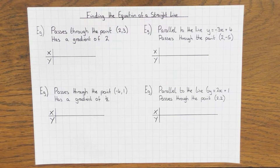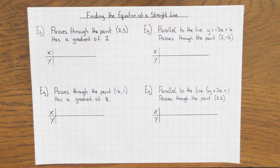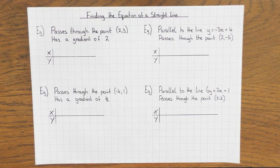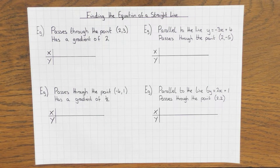Hi guys. In this video we're going to have a look at how we find the equation of a straight line when we've been given a point and a gradient, or when we've got a parallel line and a point, also when we've got two points, and also when we're trying to find a coordinate when we're given the gradient. So there's lots to talk about here.